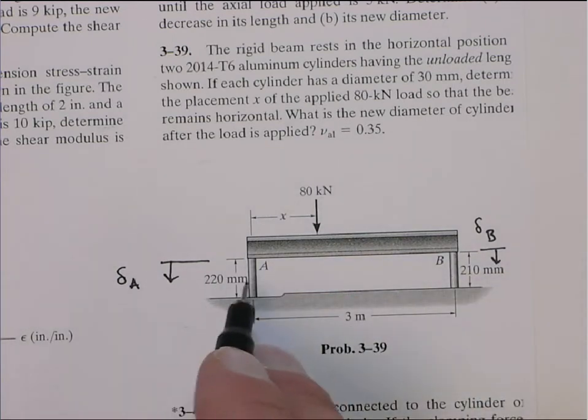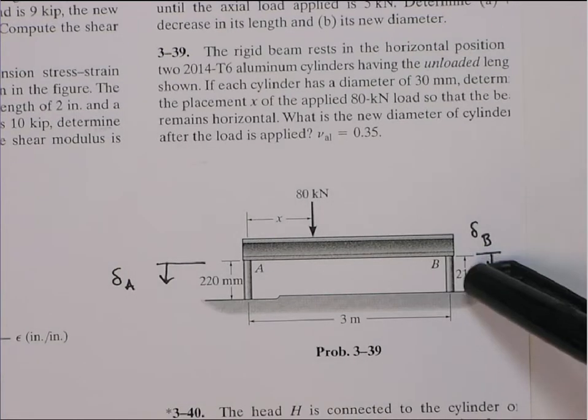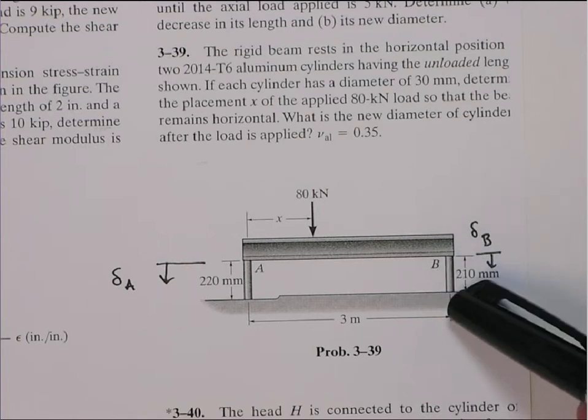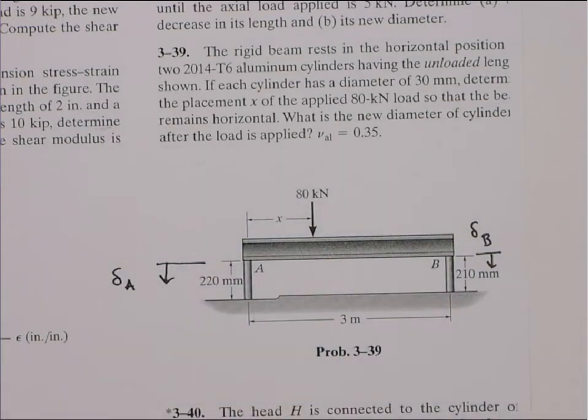In other words, such that the deflection at A equals the deflection at B. So the amount that this moves down is equal to the amount this moves down. Now, if these were the same lengths, that would correspond to the same strain, and therefore the same stress, and then the same reaction force at A and B. But since they're different lengths, this one will have to have a little greater strain because it's shorter, and therefore a greater stress, and so a greater reaction force in it.